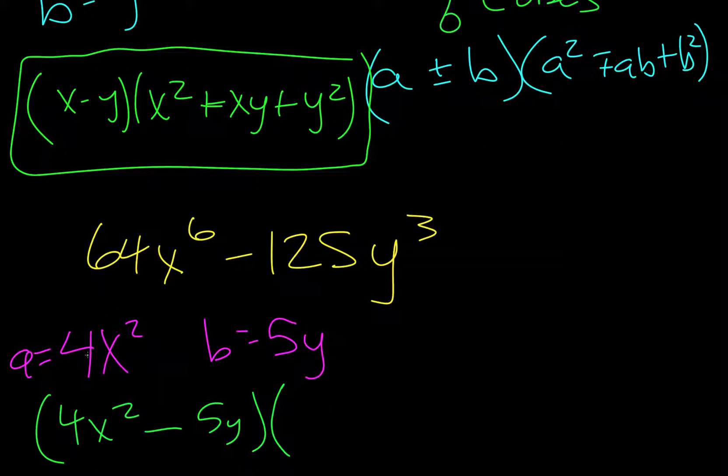So we have to square both pieces of a. So 4 squared would be 16. x squared squared would be x to the 4th. We're following the bottom because the original was minus, and this tells us where to follow. And so we get a plus sign.